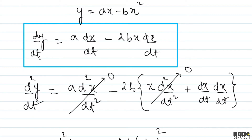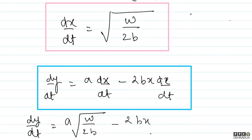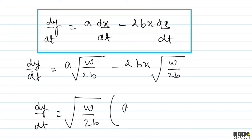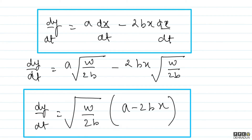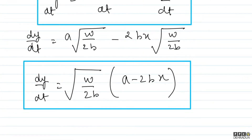Now recall the equation we had earlier: dy/dt = a·(dx/dt) - 2bx·(dx/dt). Since we now know dx/dt, we can find dy/dt as well. So dy/dt = √(w/2b)·(a - 2bx). It is clear that the velocity along y is not constant — it depends on x. But we need to find the velocity when x = 0 and y = 0, i.e., at the origin.